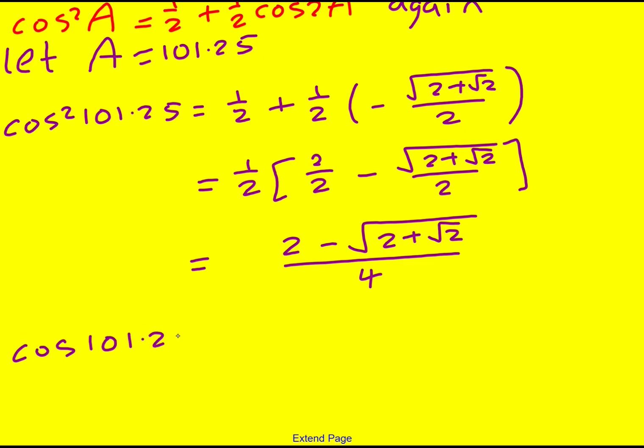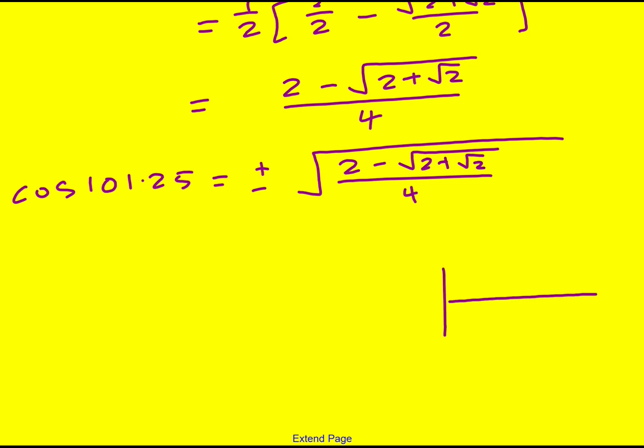And then cos 101.25° is going to be plus or minus the square root of all of that. Let's just consider the graph again. This is 180°. It's going to again be negative, basically. We're going to be between 90° and 180°, so around here. So again, take negative.